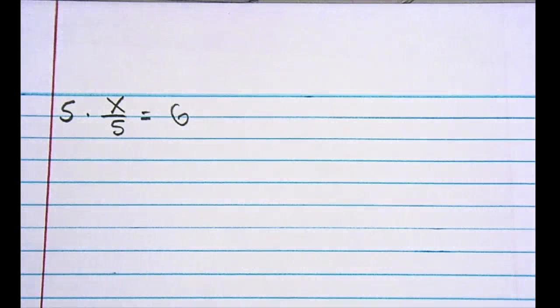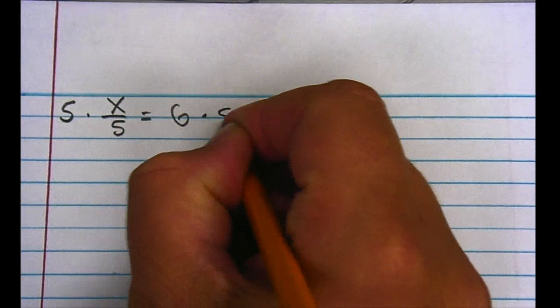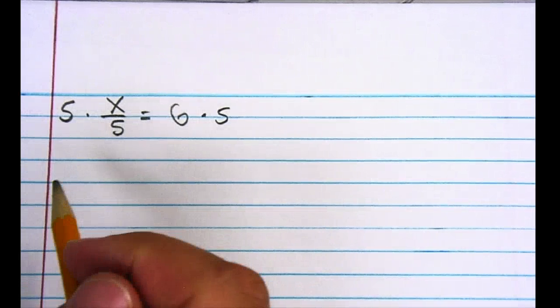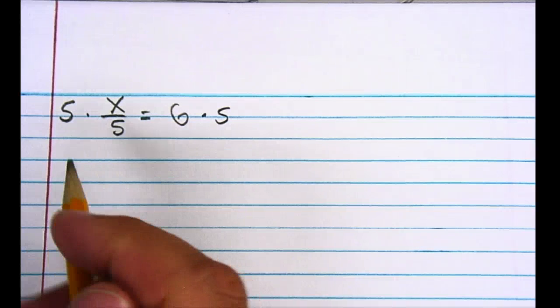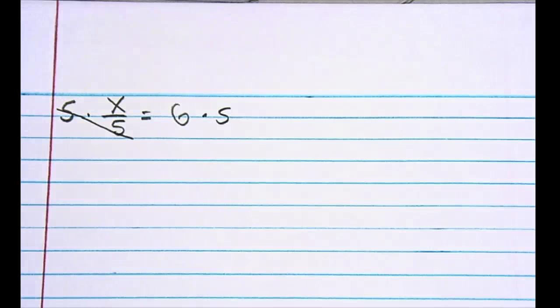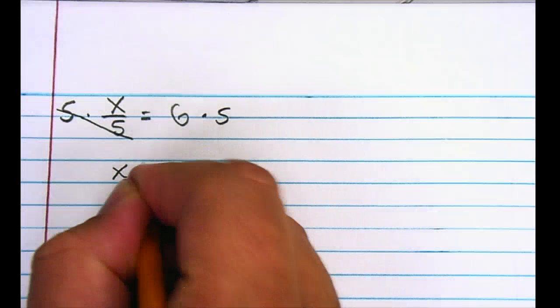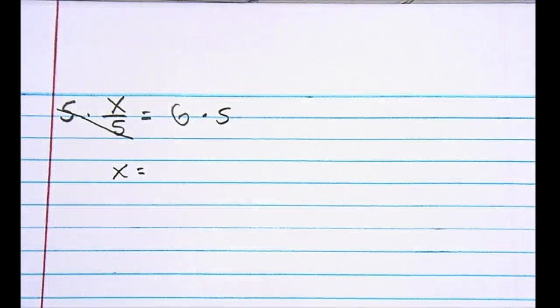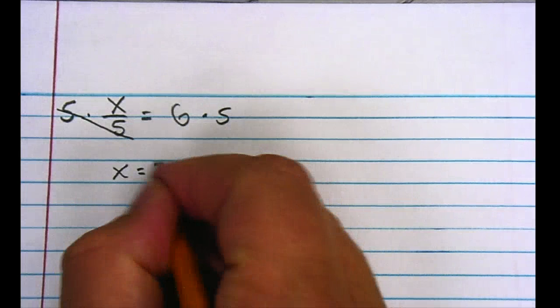If I multiply that side of the equation by 5, in order to keep it balanced, I have to multiply the other side by 5 also. Now I'm multiplying x by 5 and dividing x by 5 — those two things undo each other and cancel out. So on the left side I'm left with x, and on the right-hand side I have 6 times 5, which is 30.